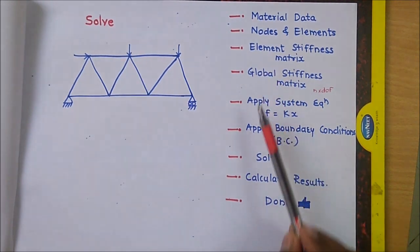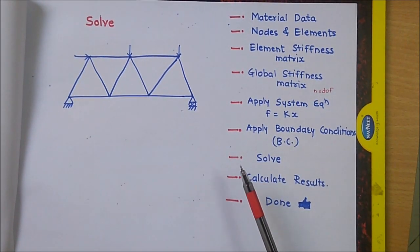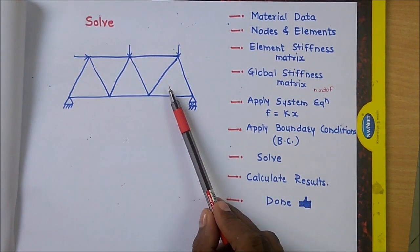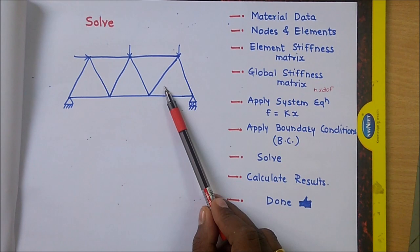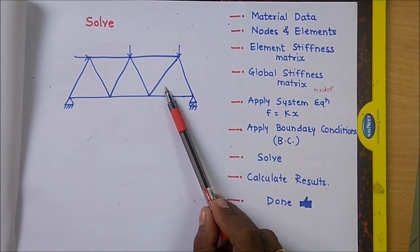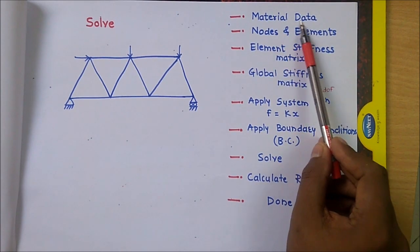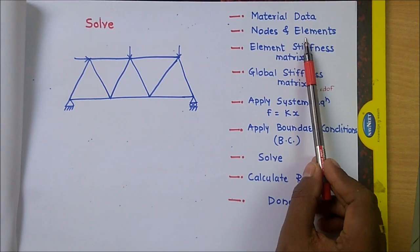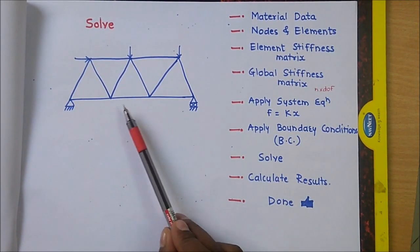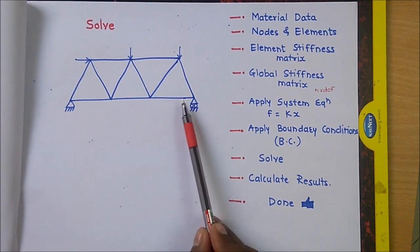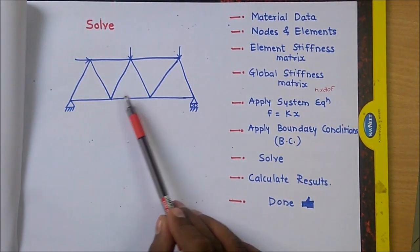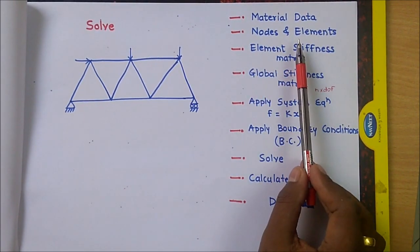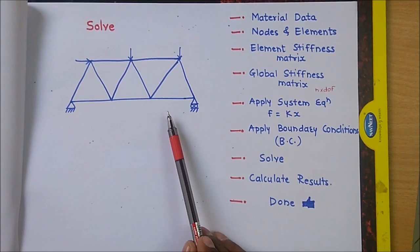Let's see the general procedure for this truss element. First of all we need material data — that means the elements having elastic modulus, cross-section area, and Poisson's ratio. After that we have to prepare node numbers and elements. According to our problem we will give node numbers, element numbers, and the connectivity between elements, meaning we will prepare an element connectivity table.